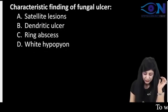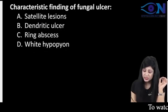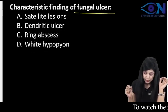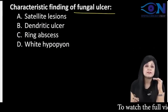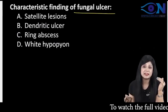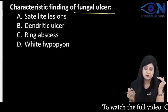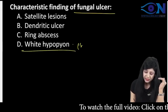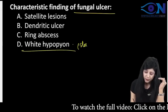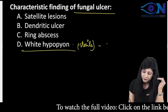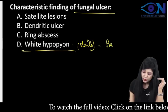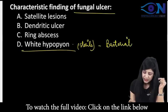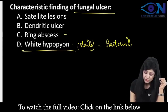Coming to the next question: characteristic finding of the fungal ulcer. If you see by the diagnosis of exclusion, hypopion — white hypopion means sterile hypopion. Sterile hypopion is a feature of the bacterial corneal ulcer and ring abscess.